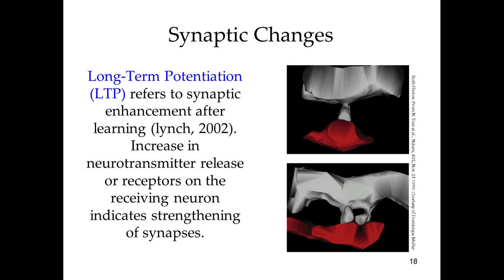The way memories continue to be formed is through a process known as long-term potentiation. Remembering back to the neuron lecture, communication occurs between neurons at the synapse. We have the axon terminal and the dendrite, with the synaptic gap right between the two neurons — that's where neurotransmitters transfer from one neuron to the next. All of these neurons are linked, and the more they communicate, the stronger the links between the two become.